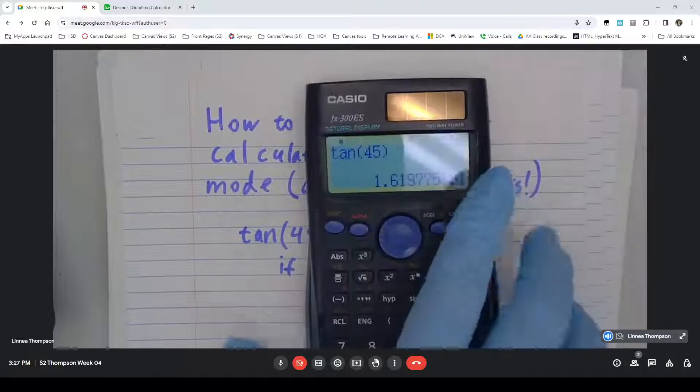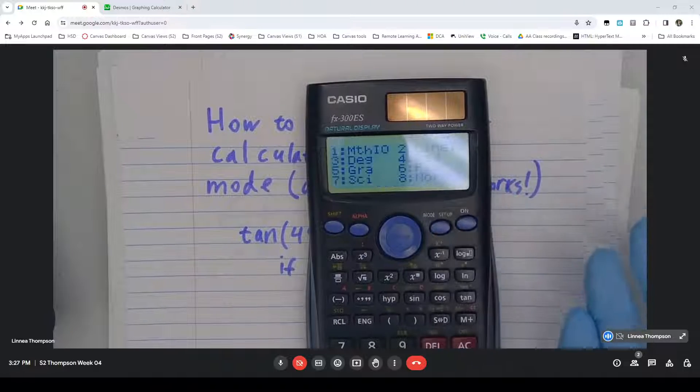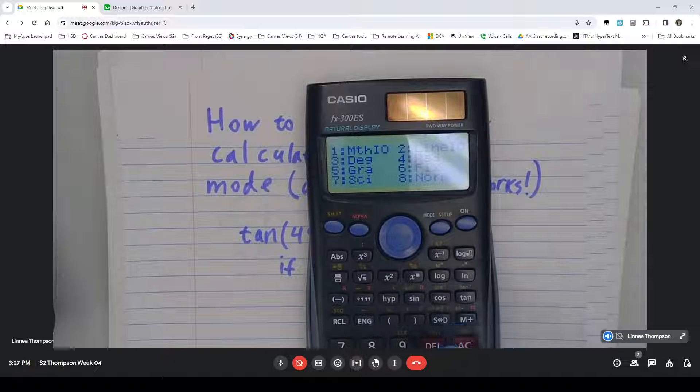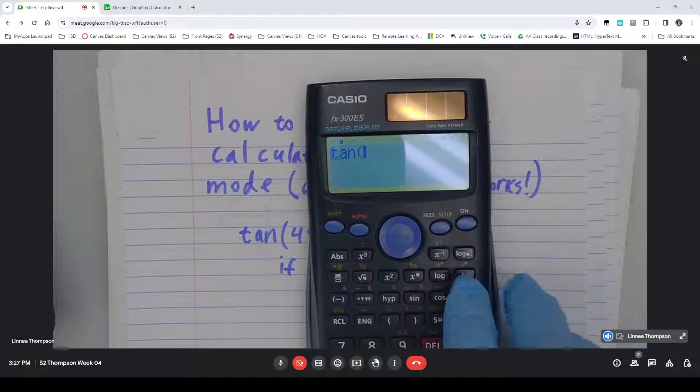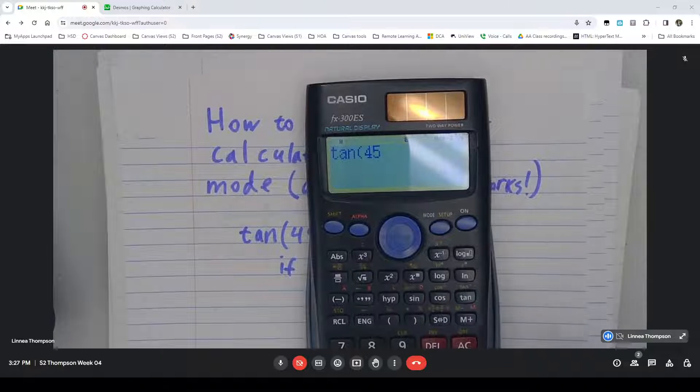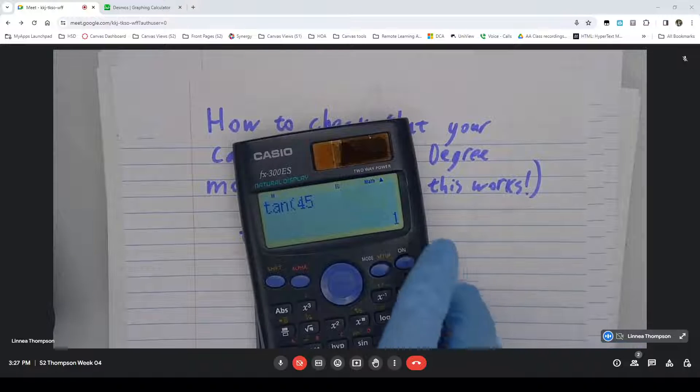But if my calculator is in degrees, on this one it's second set up and then choose 3 for degrees but this varies by calculator. Then if I put in the tangent of 45 I will instead get 1 instead of 1 and some things.